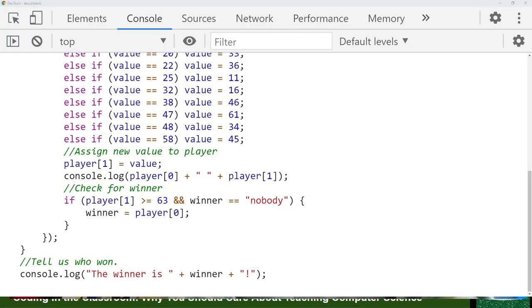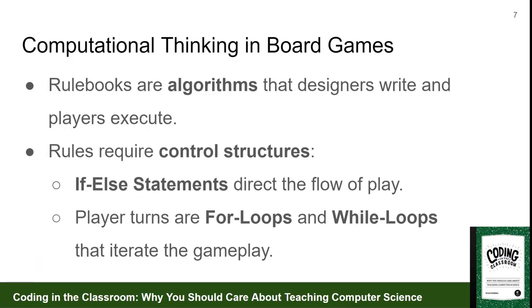Player turns are loops. They can be while loops — while no one is a winner, keep taking turns — or they can be for loops: for six rounds, each player takes a turn.